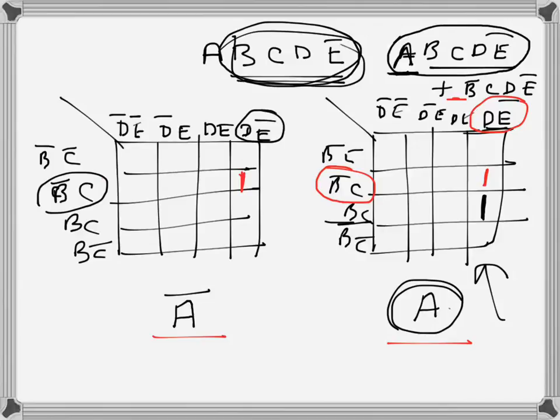So the rule is: if there is an ā in the term, the 1 goes in the ā Kmap; if there is an a, the 1 goes in the a Kmap; and if 'a' is absent entirely, the 1 goes in both Kmaps. I will do a full example afterwards to clarify this further.